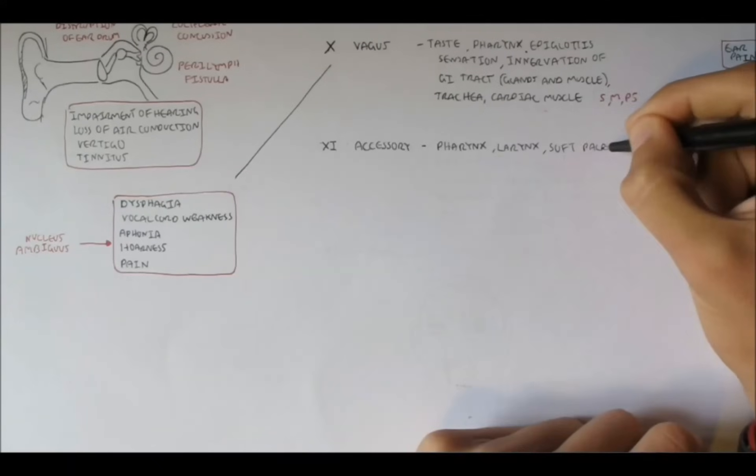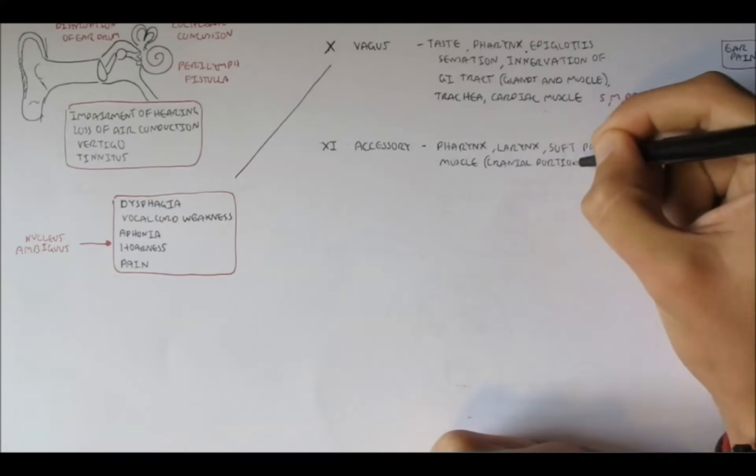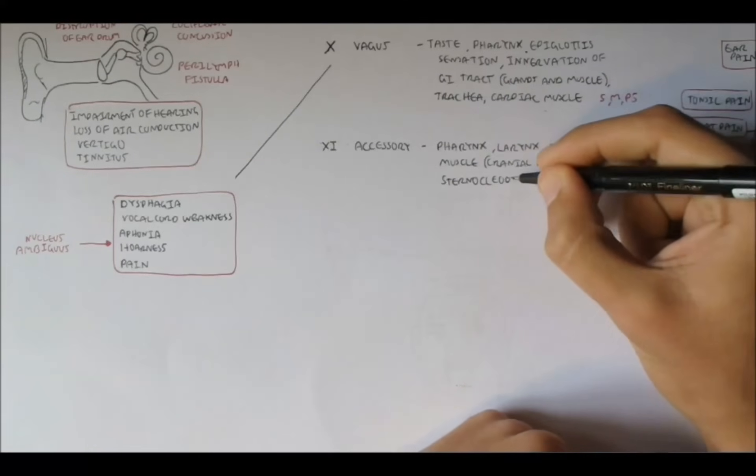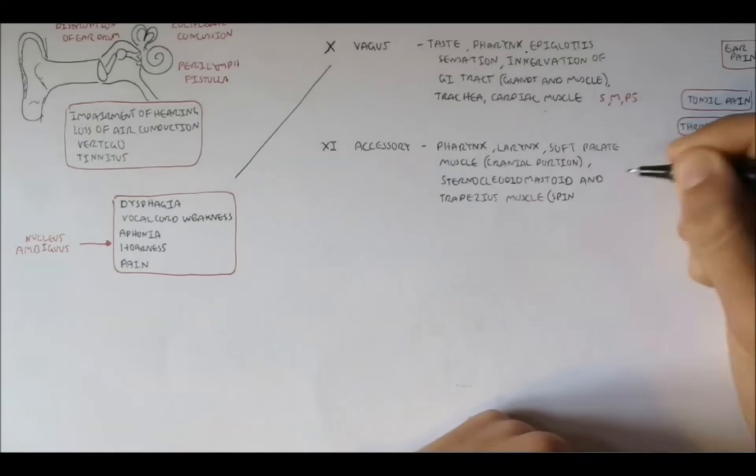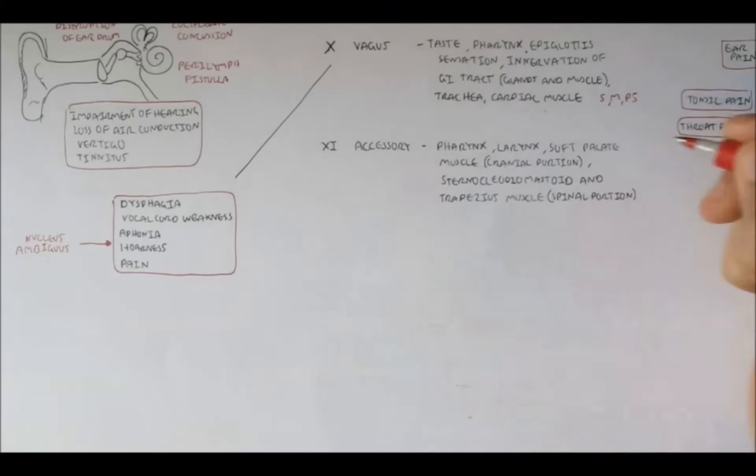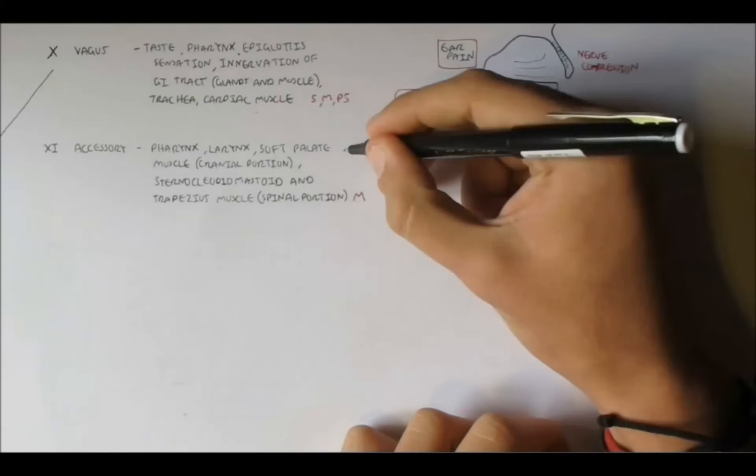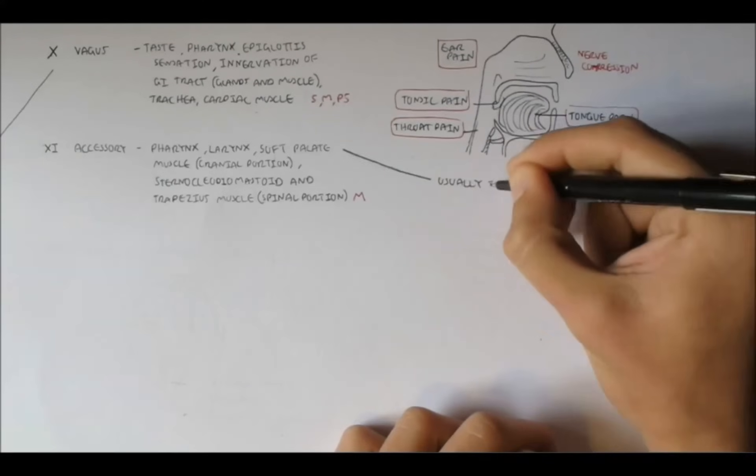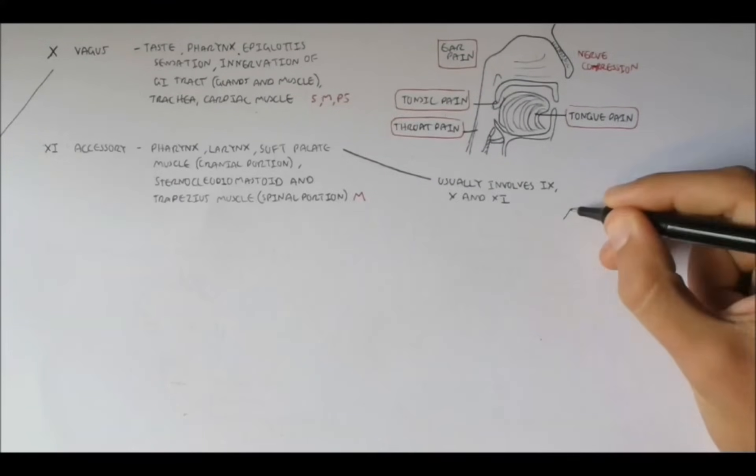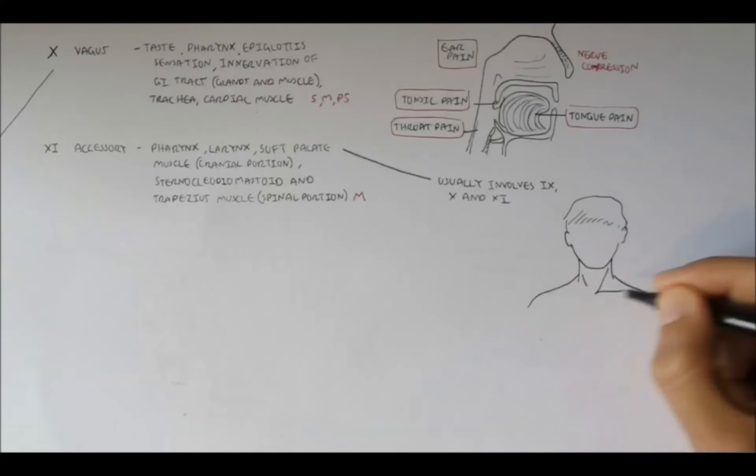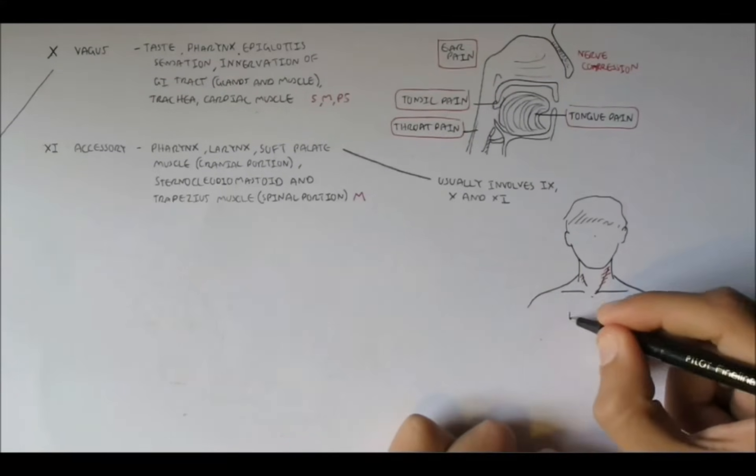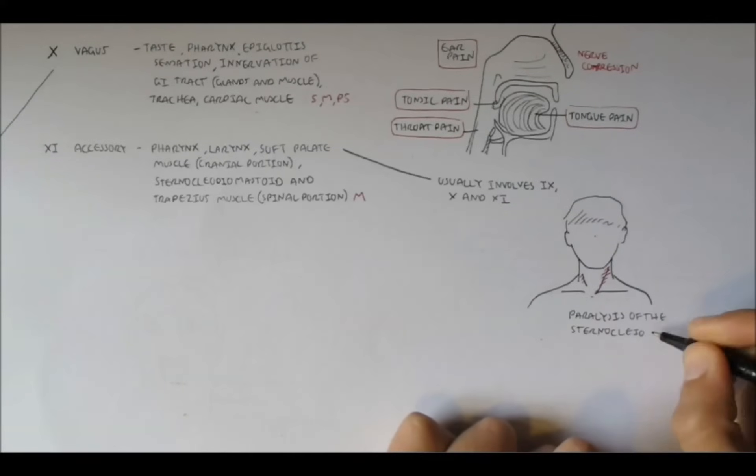Nerve 11 is the accessory nerve, which is important in controlling pharynx, larynx, soft palate muscles activity, the cranial portion, and it controls the sternocleidomastoid muscles, and the trapezius muscles as well, the spinal portion. The accessory nerve is a motor nerve. Now, same as nerve 9, damage to the accessory nerve usually involves nerve 9 and 10. But explicit damage to the accessory nerve itself can cause paralysis of the sternocleidomastoid muscle in the neck.